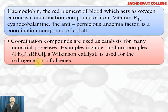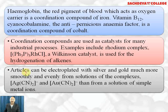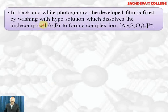Coordination compounds are used as catalysts — for example, Wilkinson's catalyst, tris(triphenylphosphine)rhodium(I) chloride, is used as a homogeneous catalyst in the hydrogenation of alkenes. Gold plating and silver plating on articles can be done using potassium argentocyanide and potassium aurocyanide in solution, where metal ions can be easily deposited.